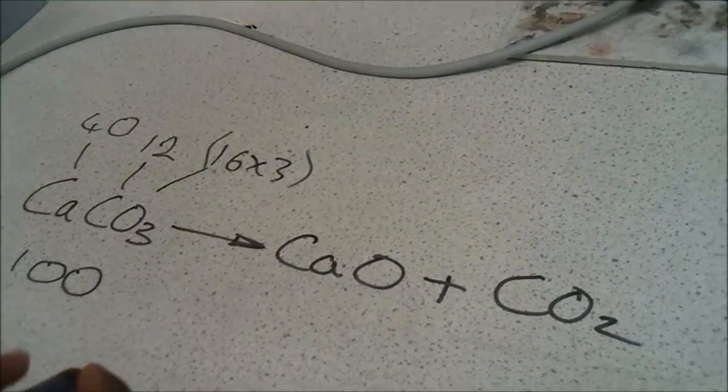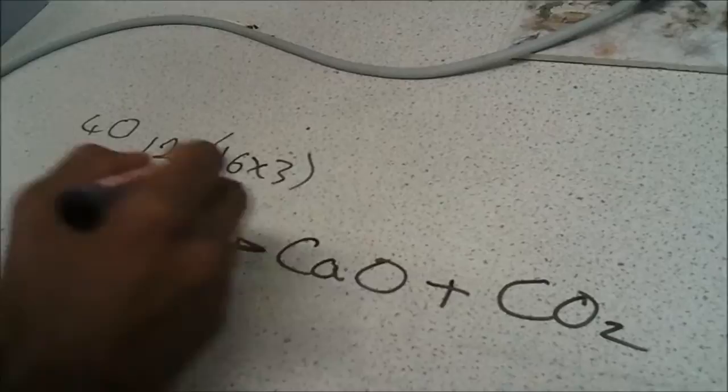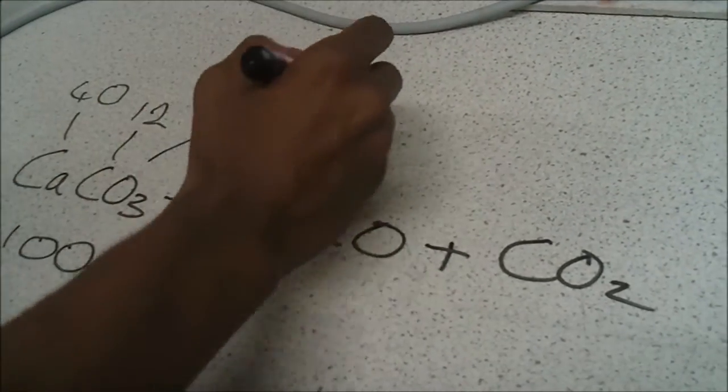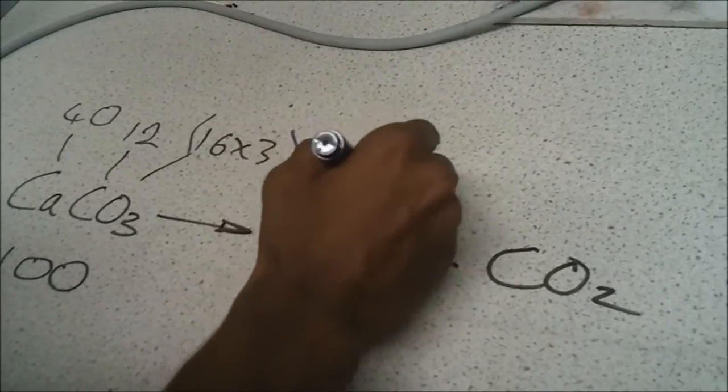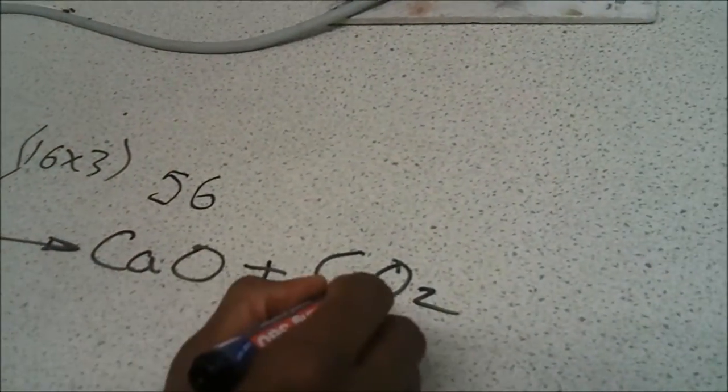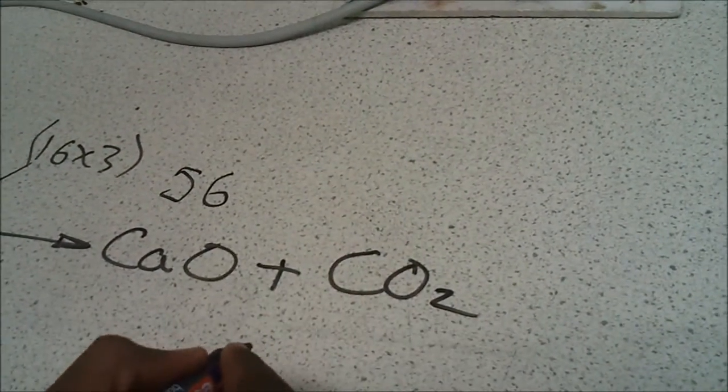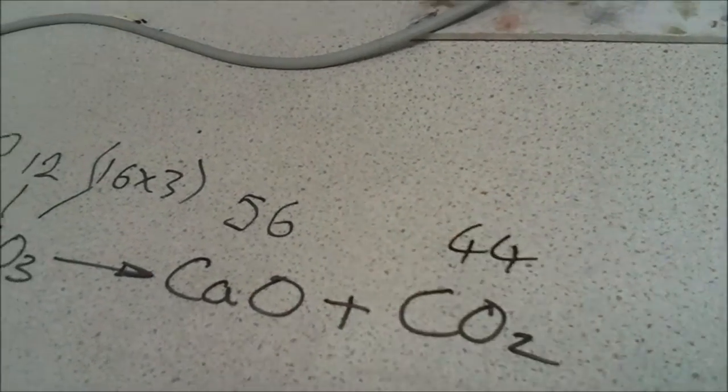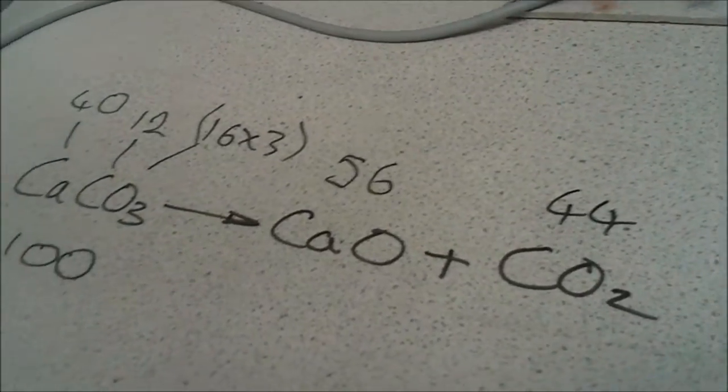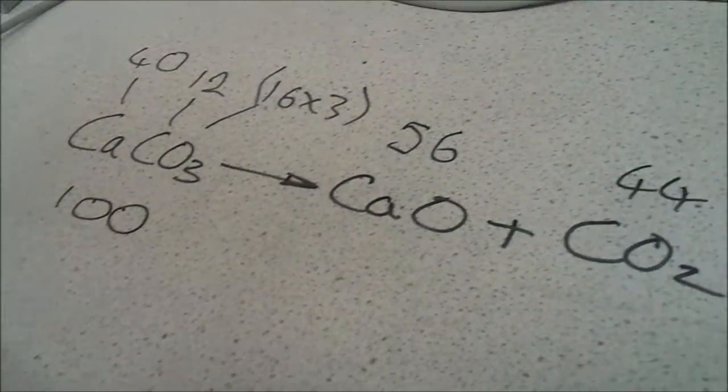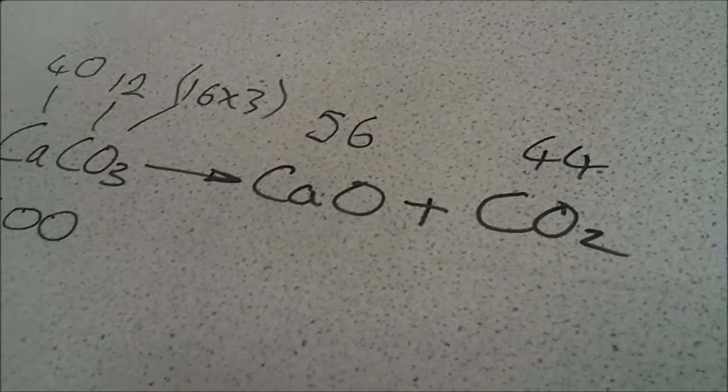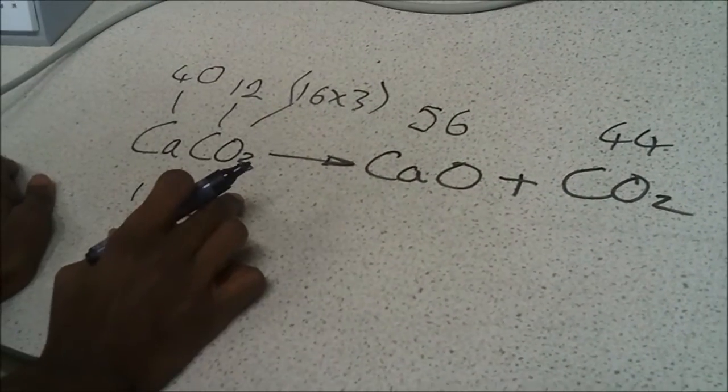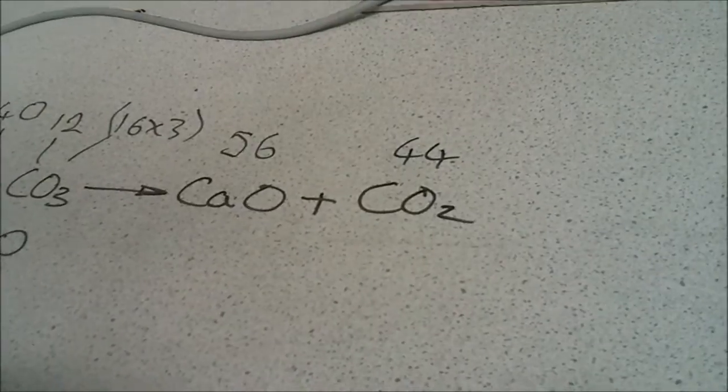OK, and calcium oxide will be 40 plus 16, which is 56. And carbon dioxide is 44. And 56 plus 44 equals 100. So 56 plus 44 gives us 100. So that proves that whatever was there in the first place will be there at the end.